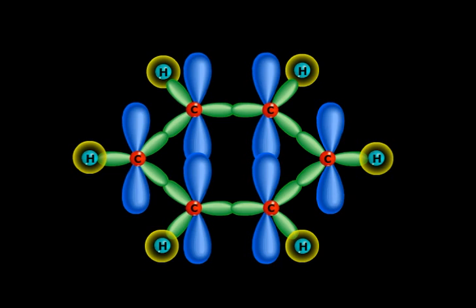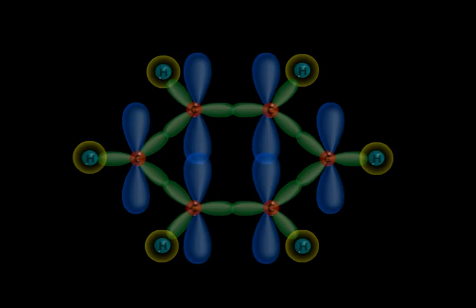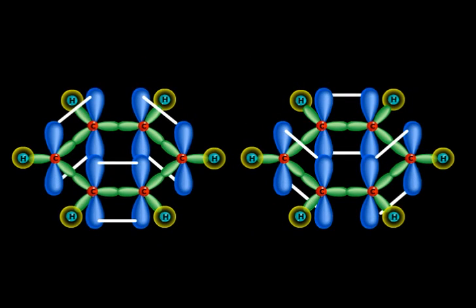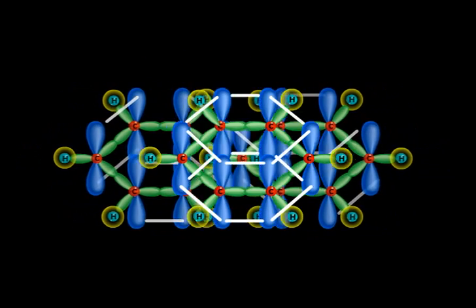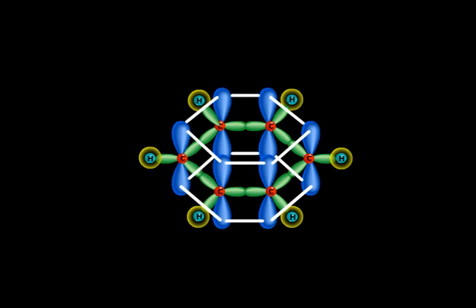Now you know these p orbitals are close enough to overlap laterally and thereafter form three pi bonds. Now these bonds can be formed in two ways as you can see. In reality, each p orbital overlaps laterally with p orbitals present on either side.